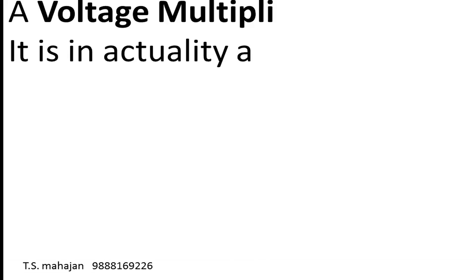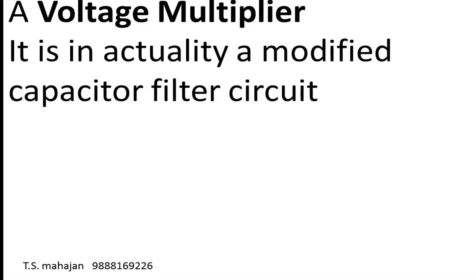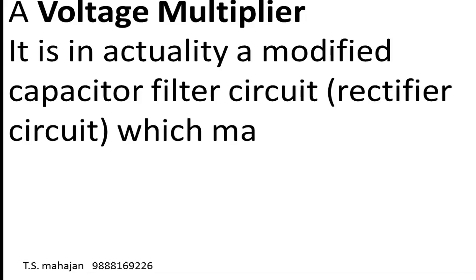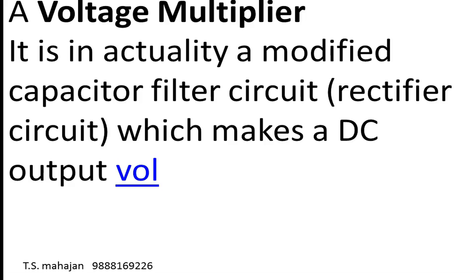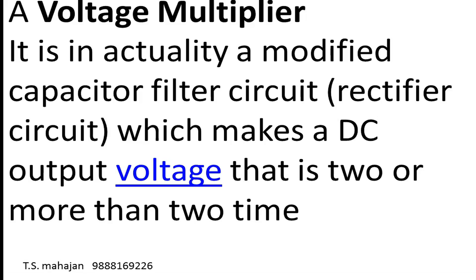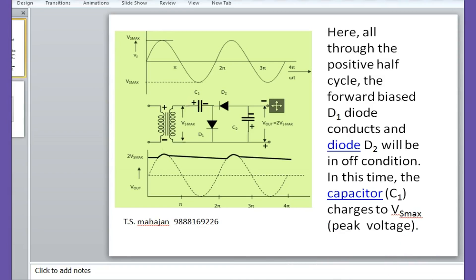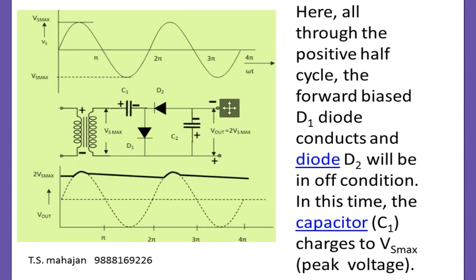A voltage multiplier circuit is actually a modification of the capacitor filter circuit. With the help of that, we can have double the voltage or even more. This is the half wave voltage doubler circuit.